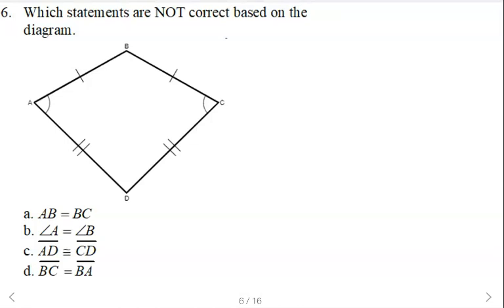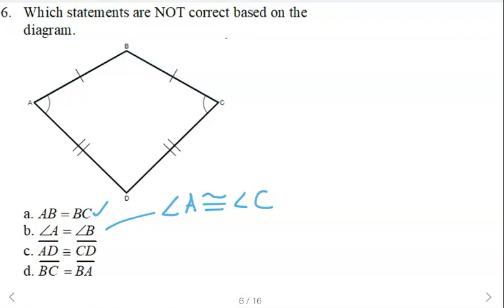Which of these is not correct based on the diagram? AB — the distance from A to B equals the distance from B to C — that's correct. Angle A equals angle B — that is not a correct statement. We can say angle A is congruent to angle C. Angles can be congruent; their measures can be equal. So we could also say the measure of angle A equals the measure of angle C — that would also be a correct statement.